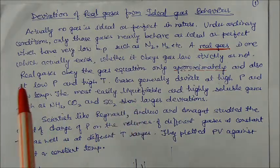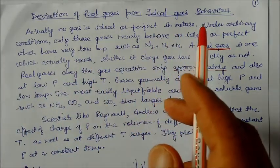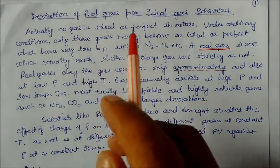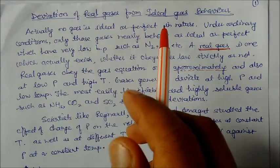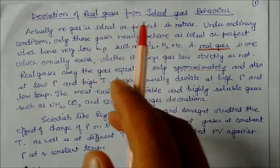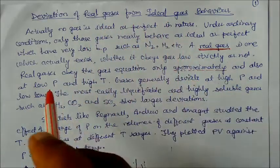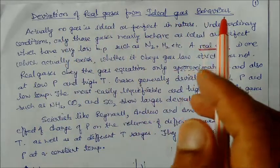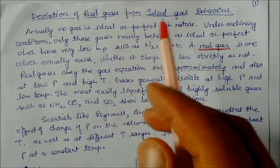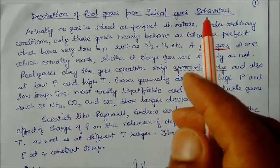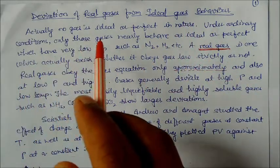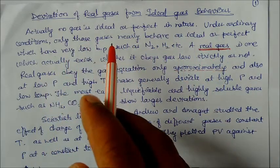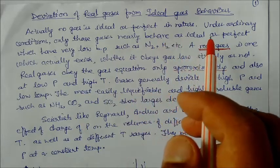Today's lecture covers the deviation of real gases from ideal gas behavior. We have previously discussed what real gases and ideal gases are and the difference between them. Now we will see how real gases deviate from ideal gas behavior in terms of pressure, temperature, and volume. Actually, no gas is ideal or perfect in nature.